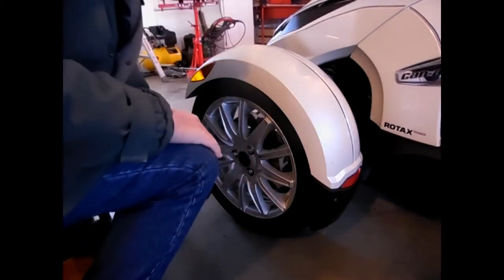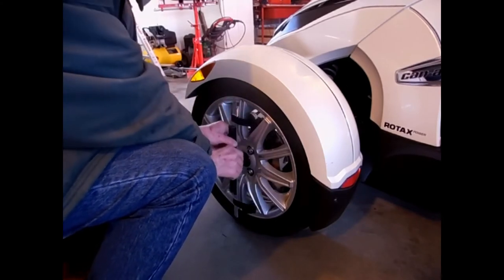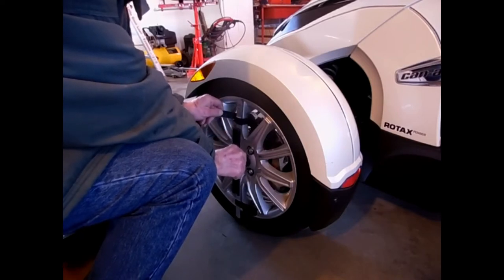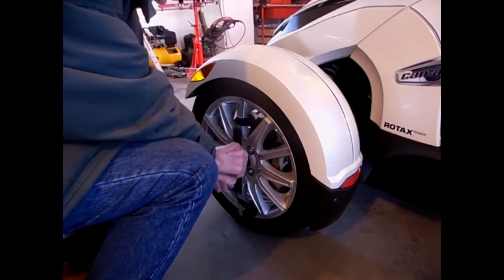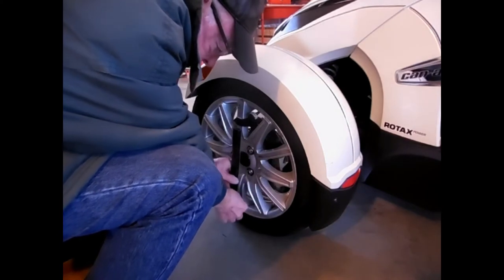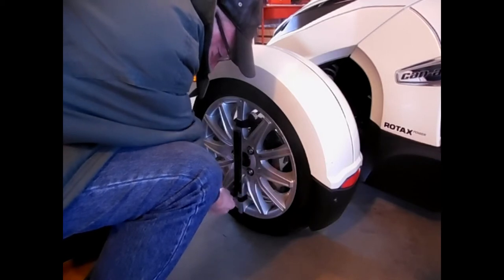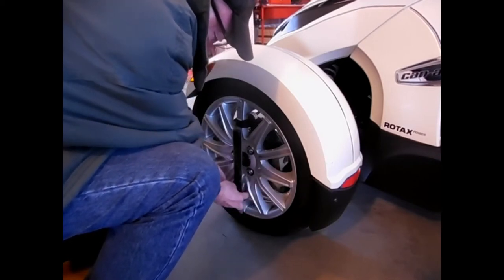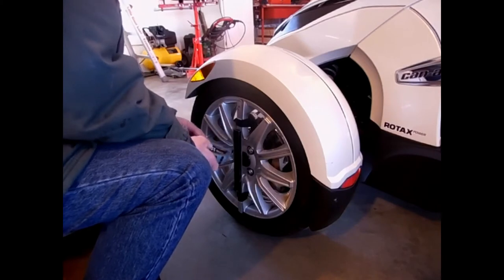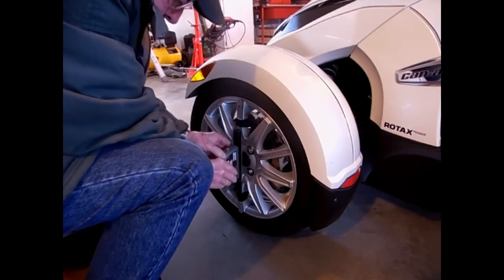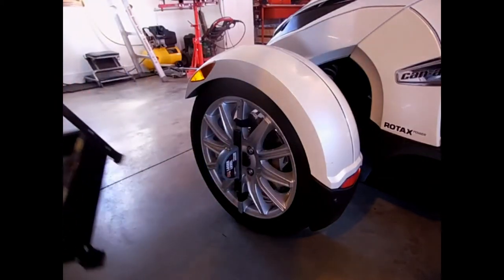I have the two straps that will be velcroed to the narrow spoke on the front two wheels. I secure them with Velcro.